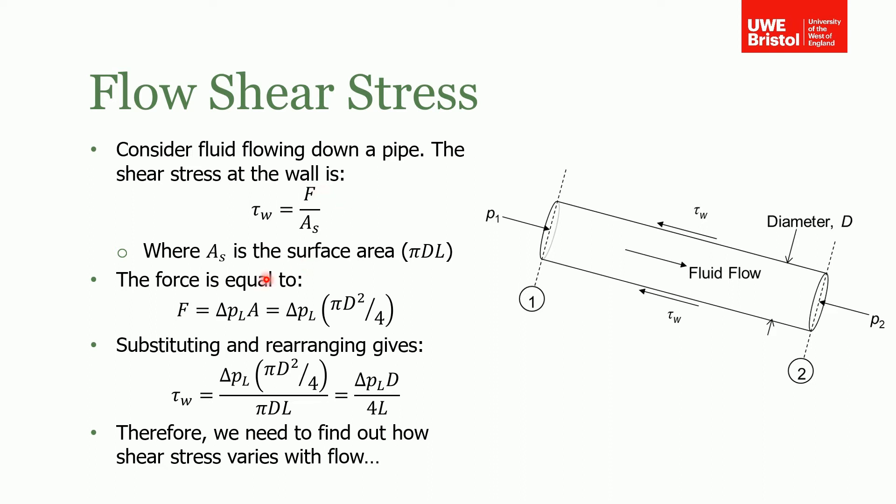If we substitute the force we just derived into this equation and put in the area for that wetted internal surface, we end up with pi and D's that cancel. We end up saying that the shear stress equals the pressure loss times the pipe diameter over 4L. So we've got a relationship, and we need to find how the shear stress varies with the flow.